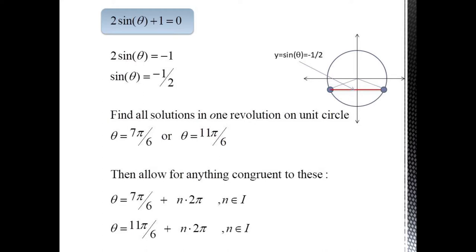And then allowing for all our other congruent variations, we write theta equals 7 pi over 6 plus n times 2 pi and theta equals 11 pi over 6 plus n times 2 pi.